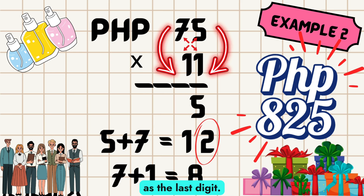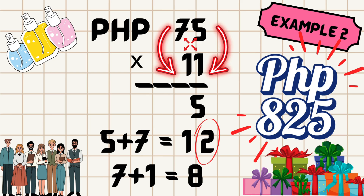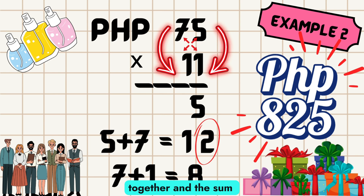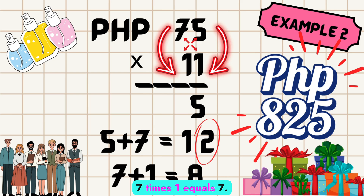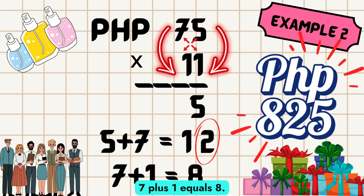Write 5 as the last digit. Now following the middle diagram, multiply 5 times 1 and 7 times 1, which equals 5 and 7 respectively. Add these two together and the sum is 12. Since 12 is a two-digit number, keep the 2 and carry the 1. So the answer to 75 times 1 gives 7 in the left column, then add the carry 1: 7 plus 1 equals 8. So the answer to 75 times 11 equals 825.